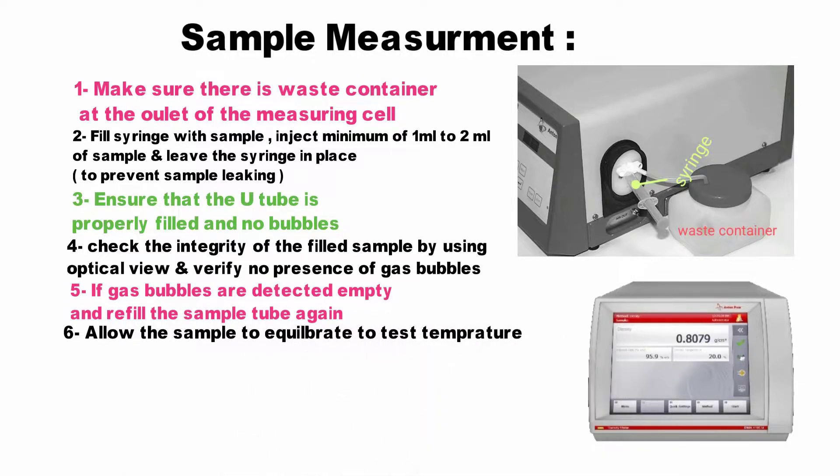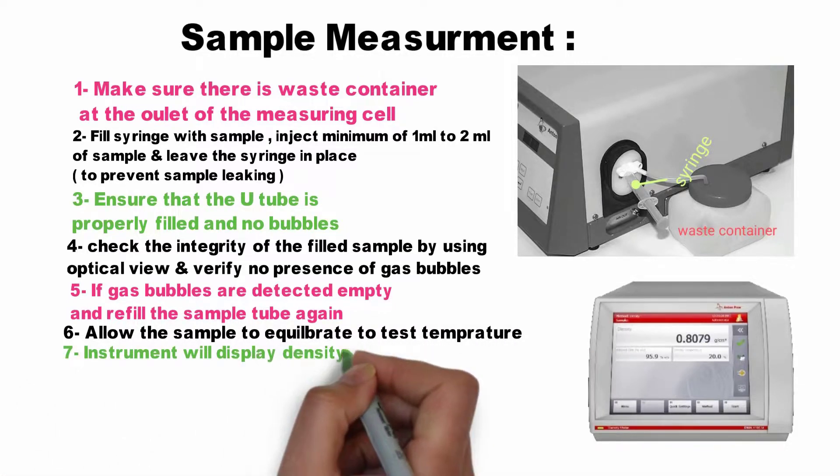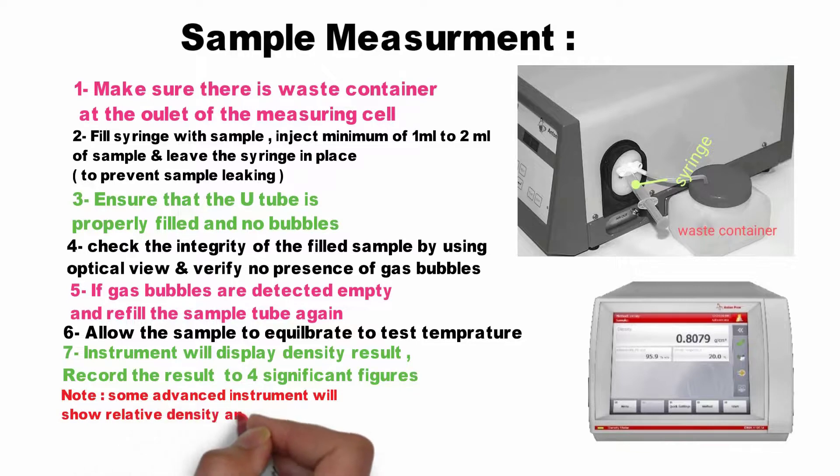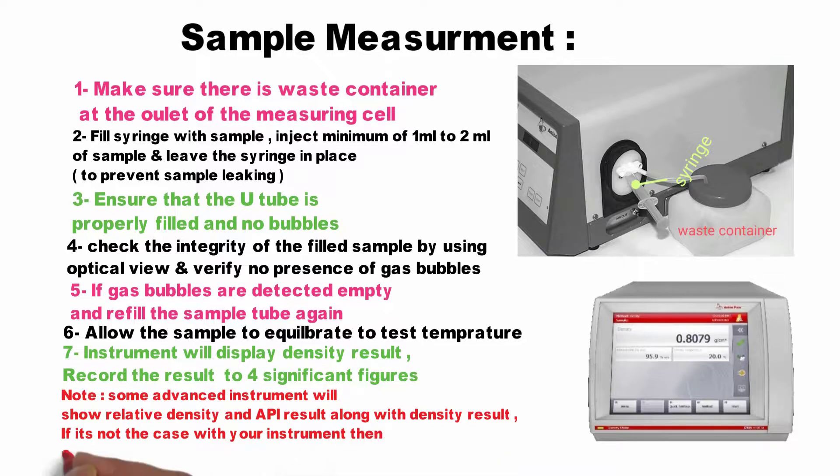The instrument will display density result. Record the result to four significant figures. Note that some advanced instruments will show relative density and API result along with the density result. If it's not the case with your instrument, then calculate it using the equation we mentioned earlier.